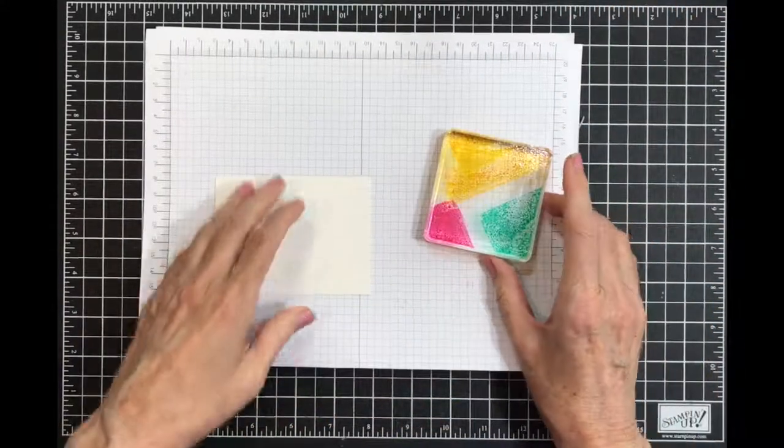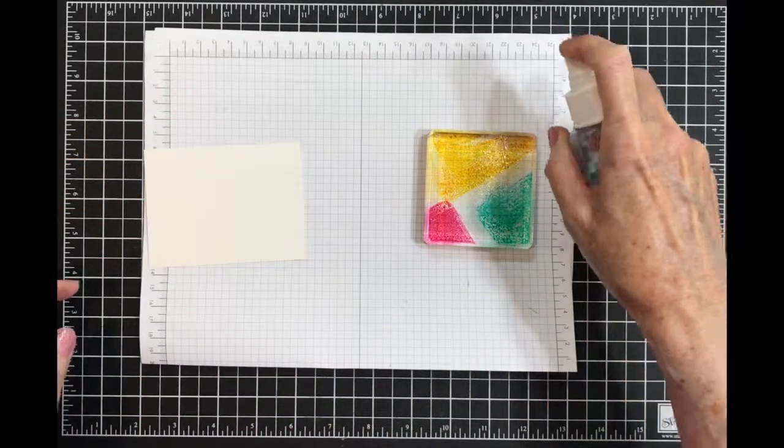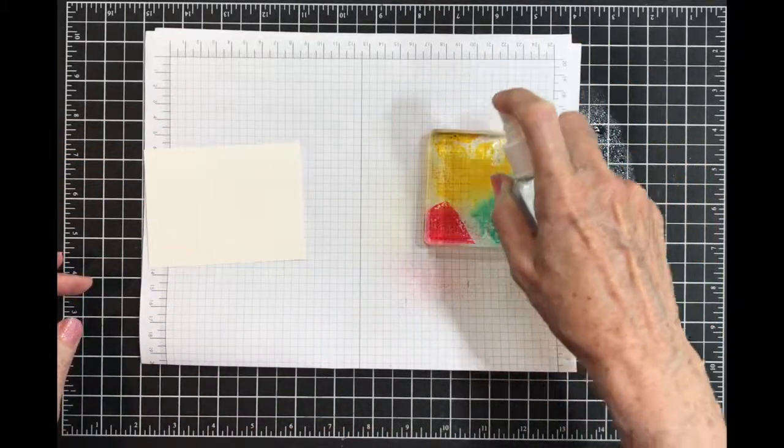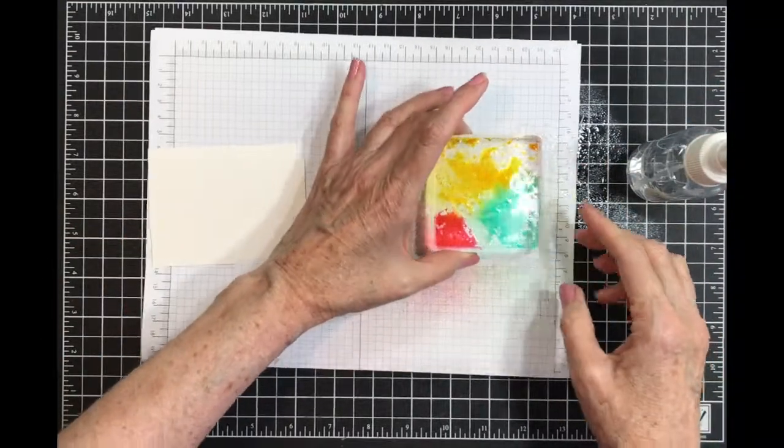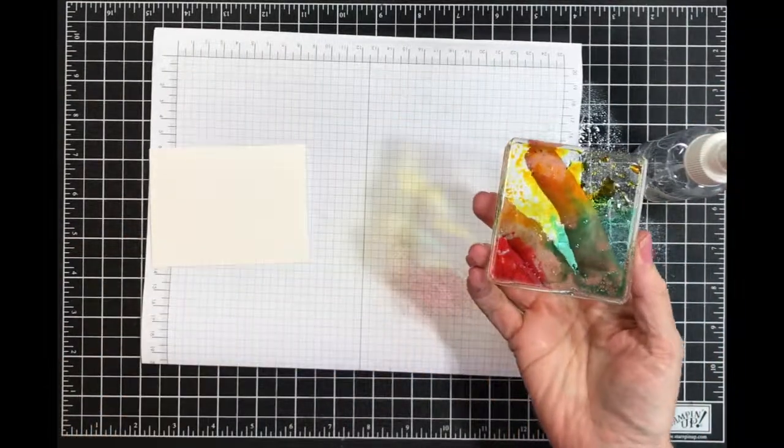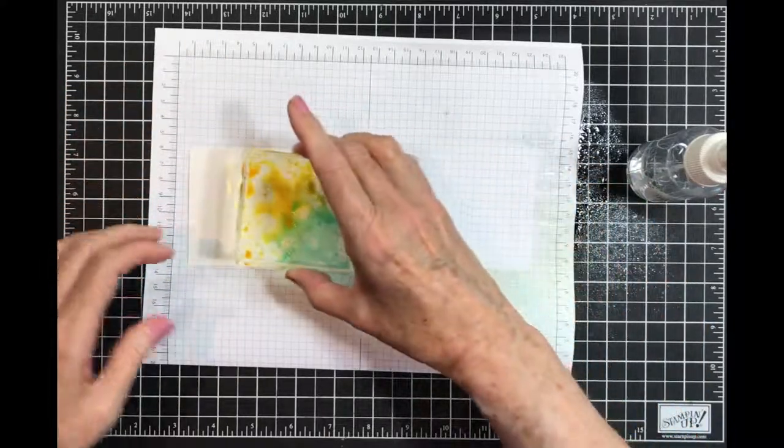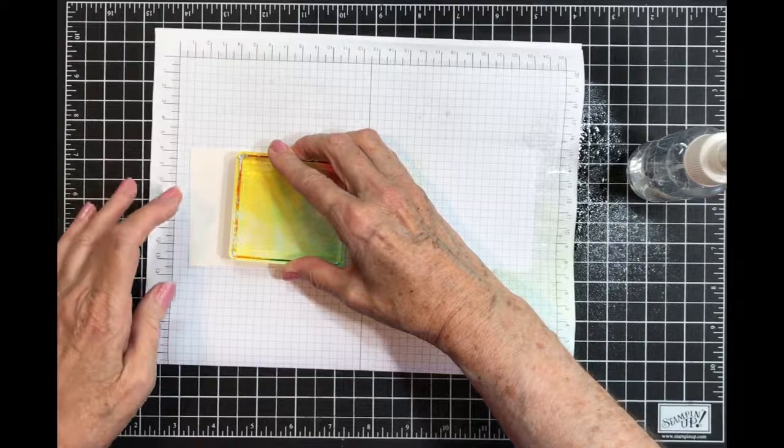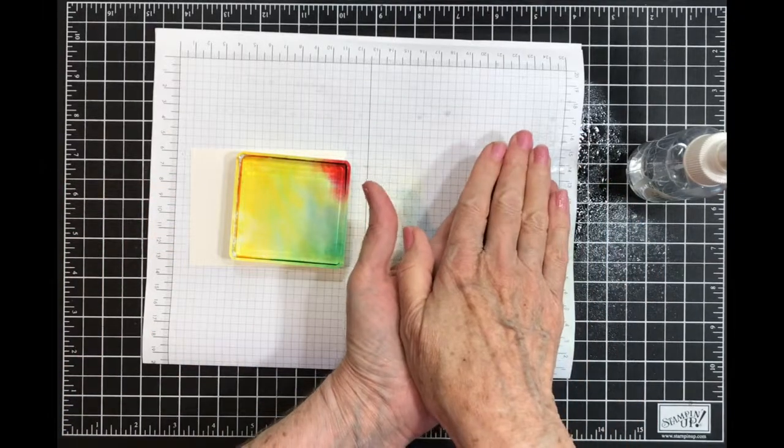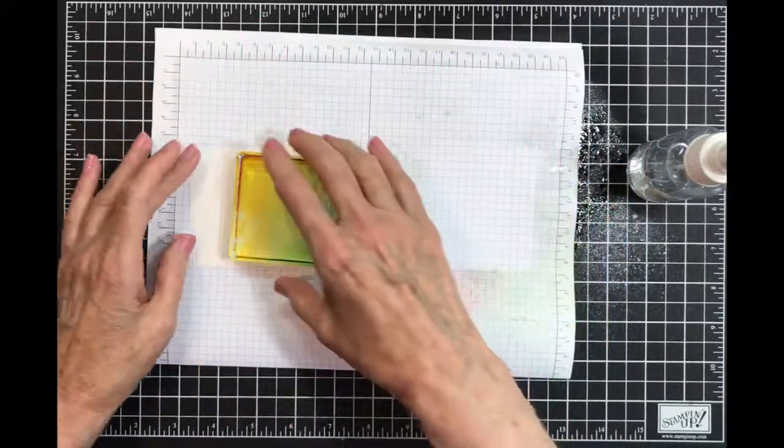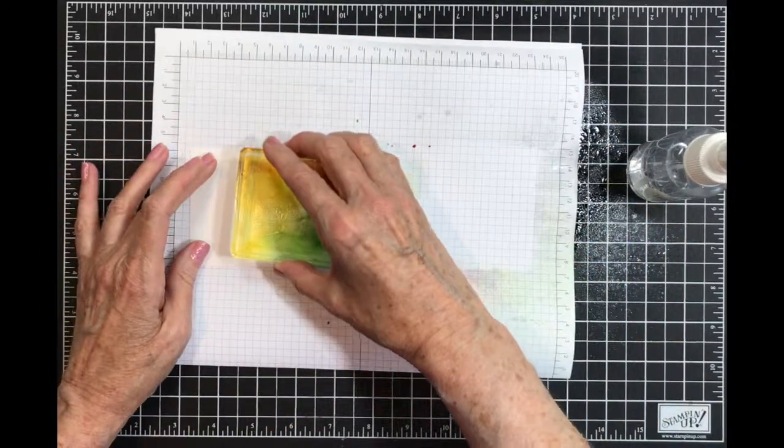Now I'm going to spritz this with water very heavily. Like I said, it gets really messy. What I have to do now is flip it over and set it down. When I flipped it over, I flipped over here so if there's any ink that drips off, it goes there.